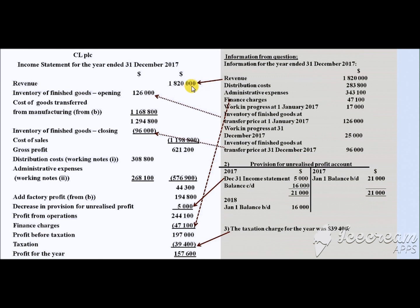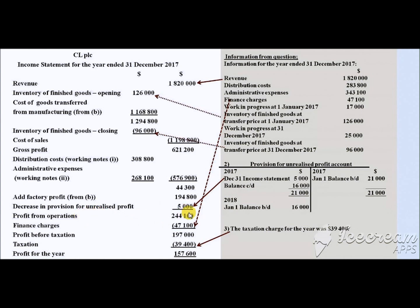Now let's make the income statement. We start with revenue from the question, then take the opening inventory value on 1st January 2017, add the cost of goods transferred from the manufacturing account, and subtract the closing inventory value to get the cost of sales. Subtracting cost of sales from sales revenue gives gross profit. From gross profit, we subtract distributive costs and administrative expenses from working notes. We then add factory profit and any decrease in the provision for unrealized profit to get profit from operations. Subtracting financial charges gives profit before tax, and subtracting tax gives profit for the year.